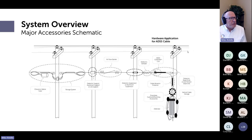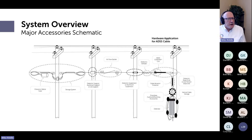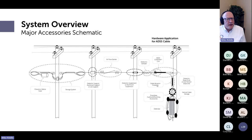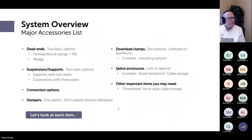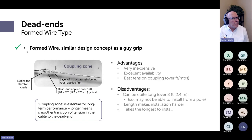This schematic gives an overview of the accessories used with ADSS cable: a dead end, possibly a corona coil in high electric field areas, an SVD-type damper, a suspension, a support, airflow spoilers if galloping is a problem, a snowshoe-type storage system, splice enclosures, down lead clamps, and abrasion protectors. We'll cover most of these items.